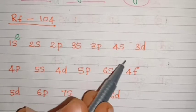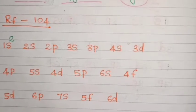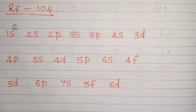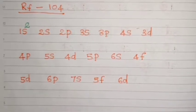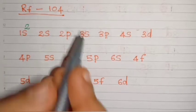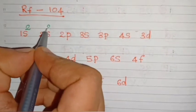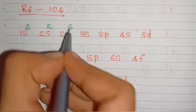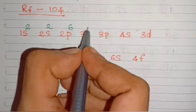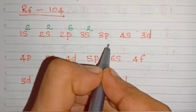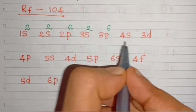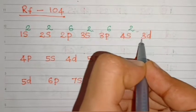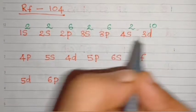First we have to write the orbitals in order. Let's fill the electrons: 1s2, then 2s2, next 2p6, then 3s — maximum 2 electrons, then 3p6, next 4s2. Then 3d — we know d can hold 10 electrons, so 3d10. Then 4p, and whatever p orbital it is, the capacity of p is 6.